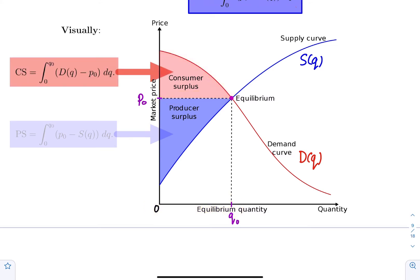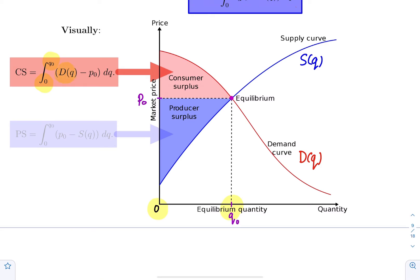The integral from 0 to Q0 — where 0 is the lower bound and Q0 is the upper bound of the definite integral — of D(Q), the upper function, minus P0, the lower function. If you compute this definite integral, you get the consumer's surplus.